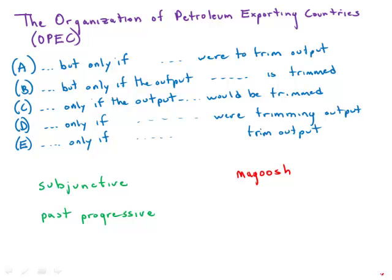Diving into the answers. Answer choice A has the form 'were to trim,' which is the subjunctive form. The subjunctive is used when we're talking about something hypothetical. But in this particular sentence, there's nothing hypothetical — these are real economic facts. OPEC is going to cut their production only if these other countries cut their production. It's all very real, so the subjunctive does not work here.